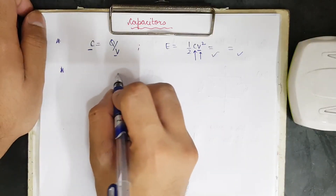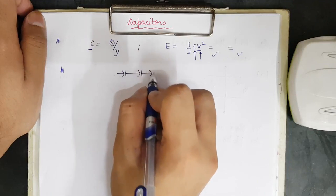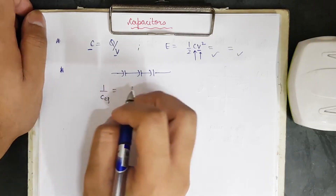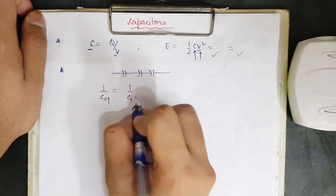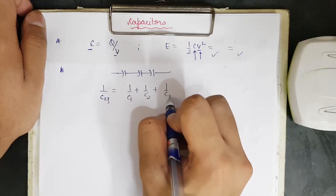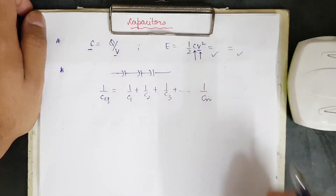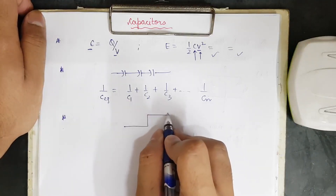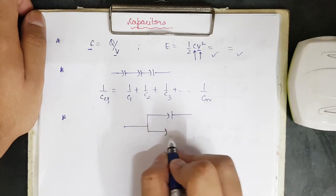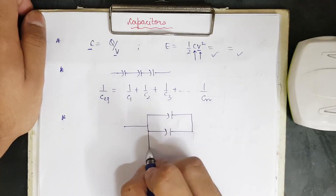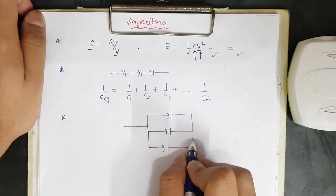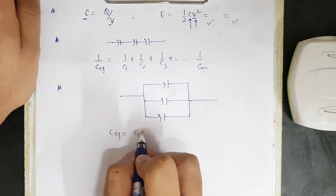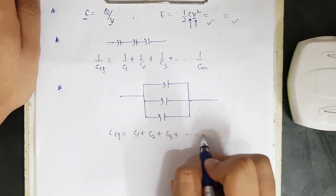When capacitors are connected in series, the equivalent capacitance is given by 1/C_eq = 1/C1 + 1/C2 + 1/C3 + ... for n capacitors. This is a revision series so we focus on important questions. For parallel connection, C_eq = C1 + C2 + C3 up to Cn.